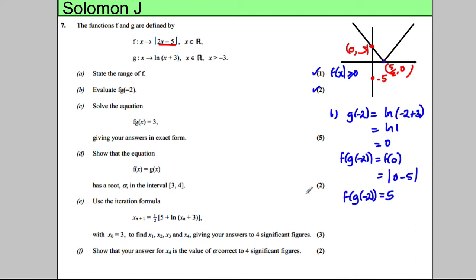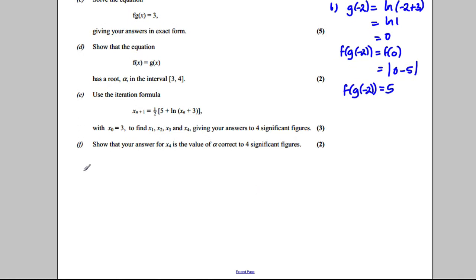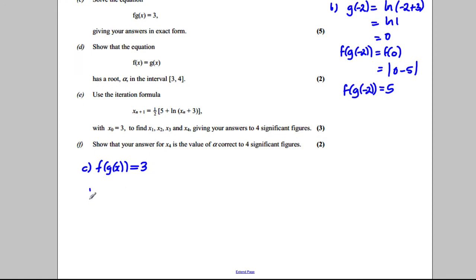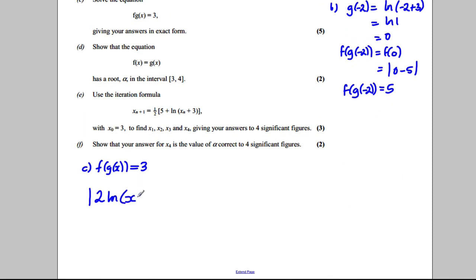Now we're asked to solve the equation F(G(x)) = 3, giving exact answers. So F(G(x)) = 3 — putting G(x) into F — gives us the modulus of 2·ln(x + 3) − 5 = 3. We're going to solve that.